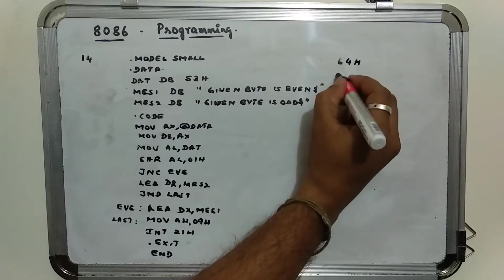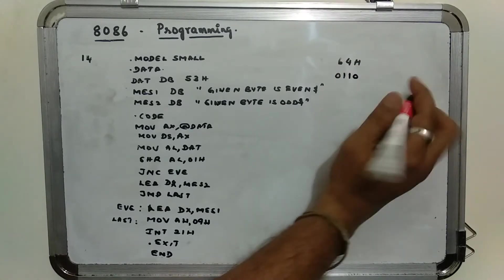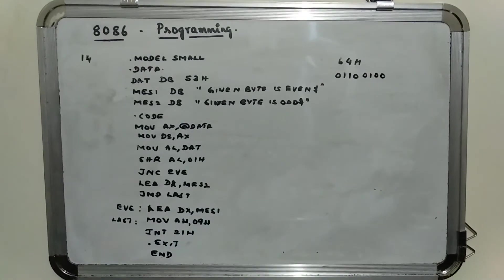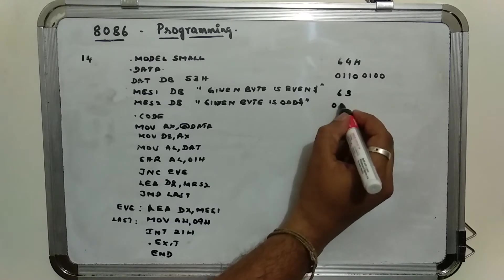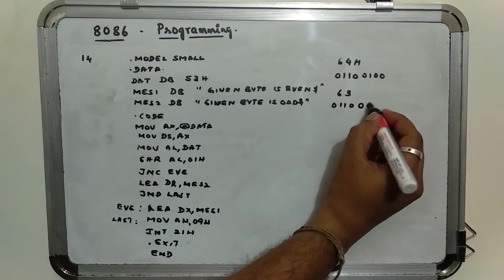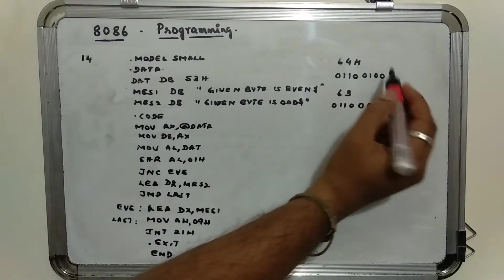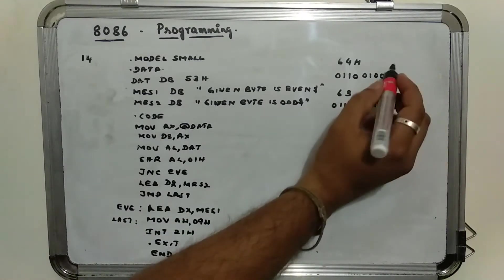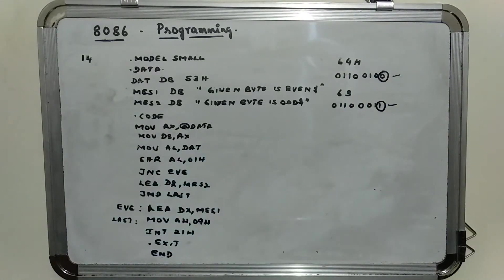How do we represent 64h in binary? It is 01100100. Now what is the difference — how do we say a number is even or odd? It depends upon the LSB bit. If the LSB bit is 0, it is even, and if the LSB bit is 1, it is odd. That is the simple logic used to check whether the given byte is even or odd.